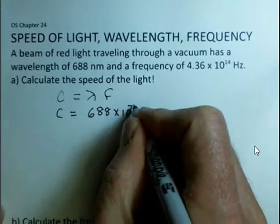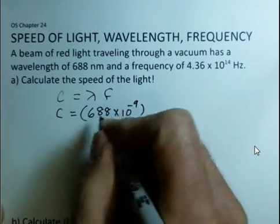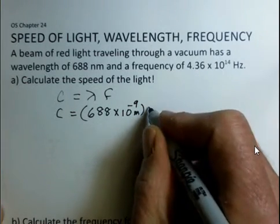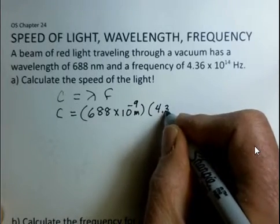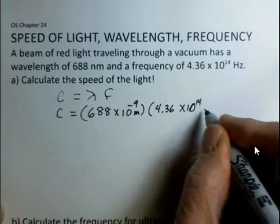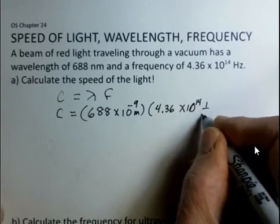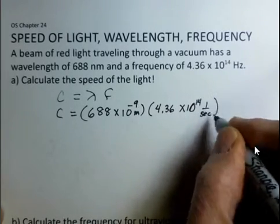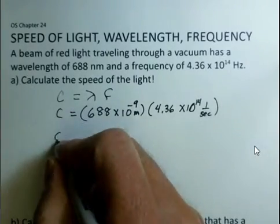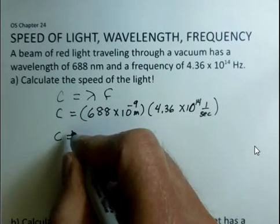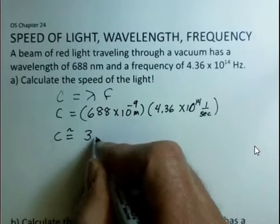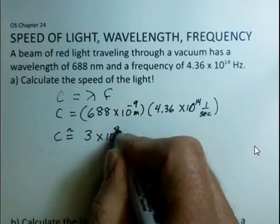The nano becomes a 10 to the minus 9 factor. We need standard metric units of meters for the wavelength. The frequency is 4.36 times 10 to the 14th, and hertz is a standard unit. I'm going to write down all the digits that were displayed, but 3 times 10 to the 8th meters per second.